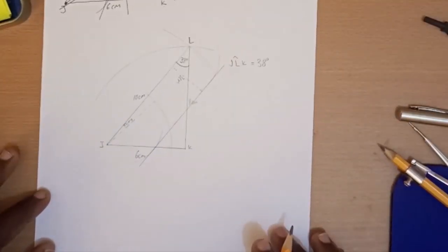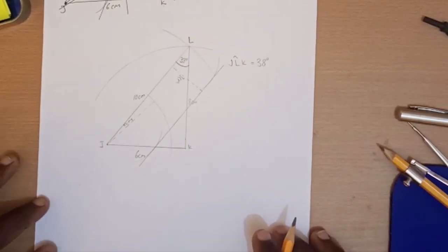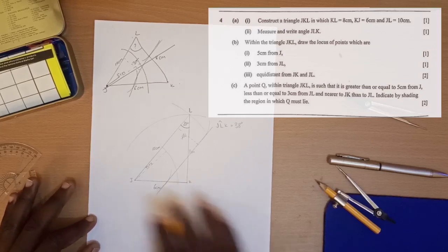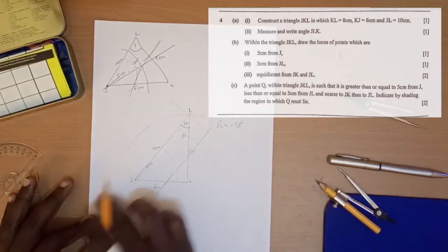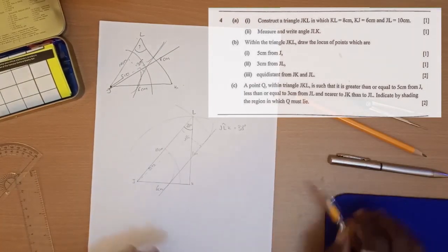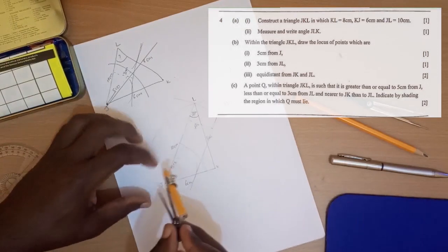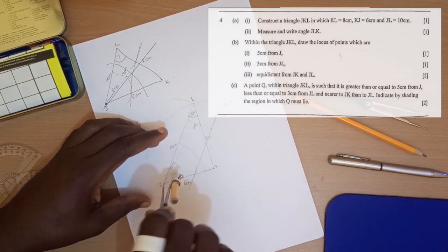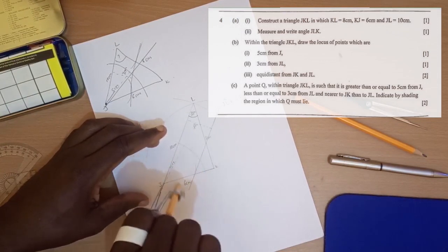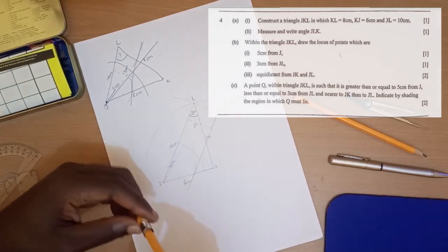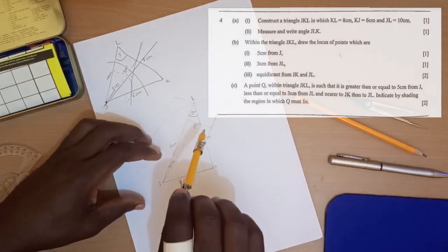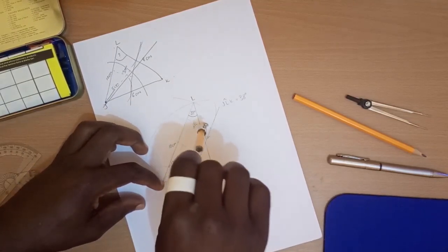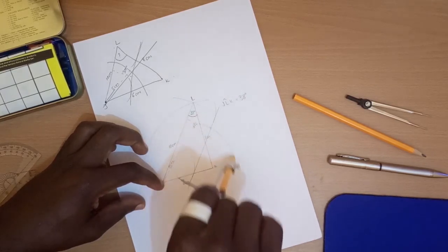The last equidistance that we are drawing is equidistant from JK to JL. So we use our compass. You just reduce a little bit, maybe even up to there, you do that. And you do the same on the other side. Enlarge slightly. Stand there and draw a small arc like that.